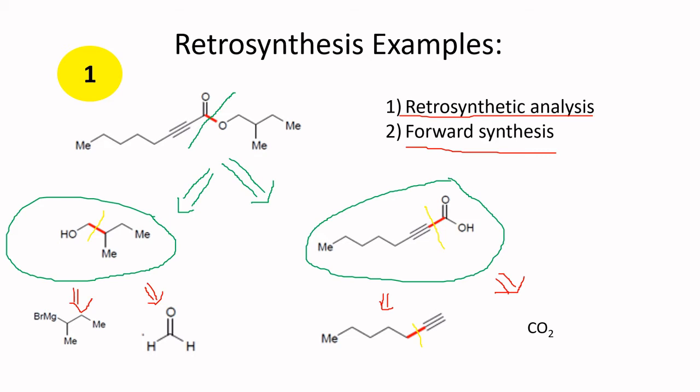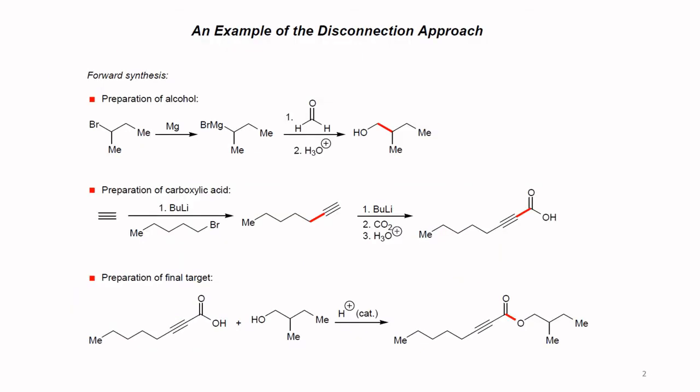Now we go to the forward synthesis. We have the starting material — the alcohol and the carboxylic acid. To prepare the alcohol, you start with an alkyl halide, react it with magnesium to give a Grignard reagent, and then react that Grignard reagent with formaldehyde to give the primary alcohol.